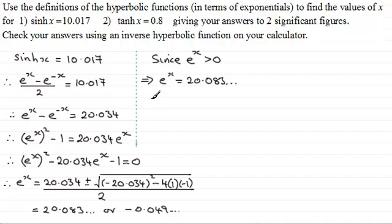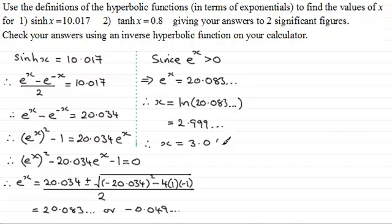It follows from this that e to the power x then must equal 20.083 and so on. So if we take natural logs to both sides here we end up with x equaling the natural log then of 20.083 and so on. Working this out you end up with 2.999 and so on. So therefore if we round this then to 2 significant figures x is going to be equal to 3.0 to 2 significant figures.